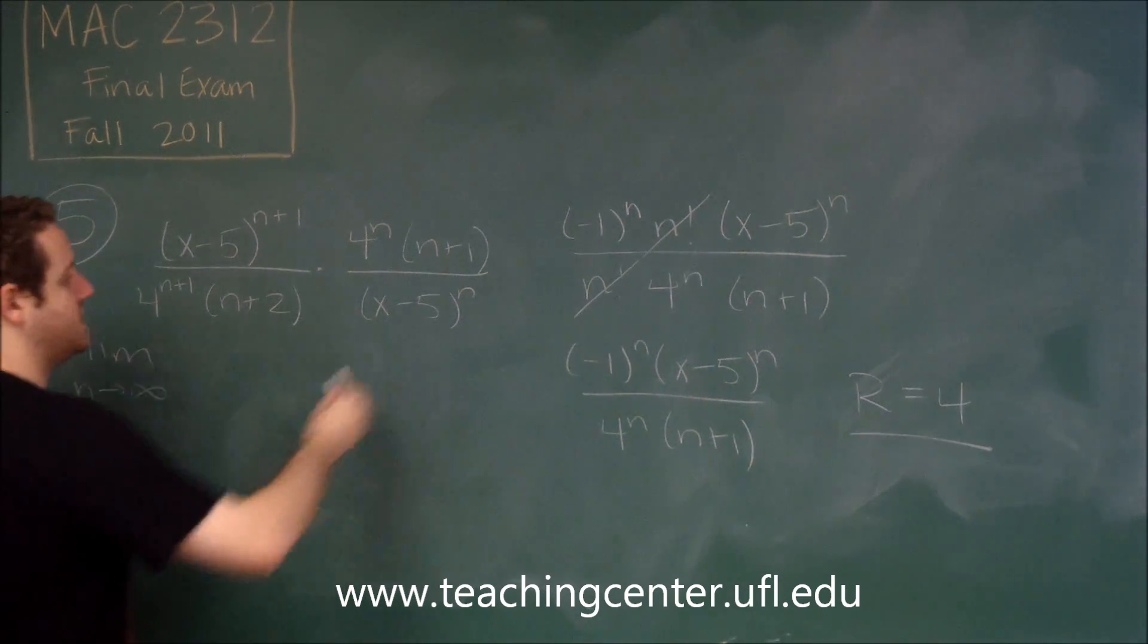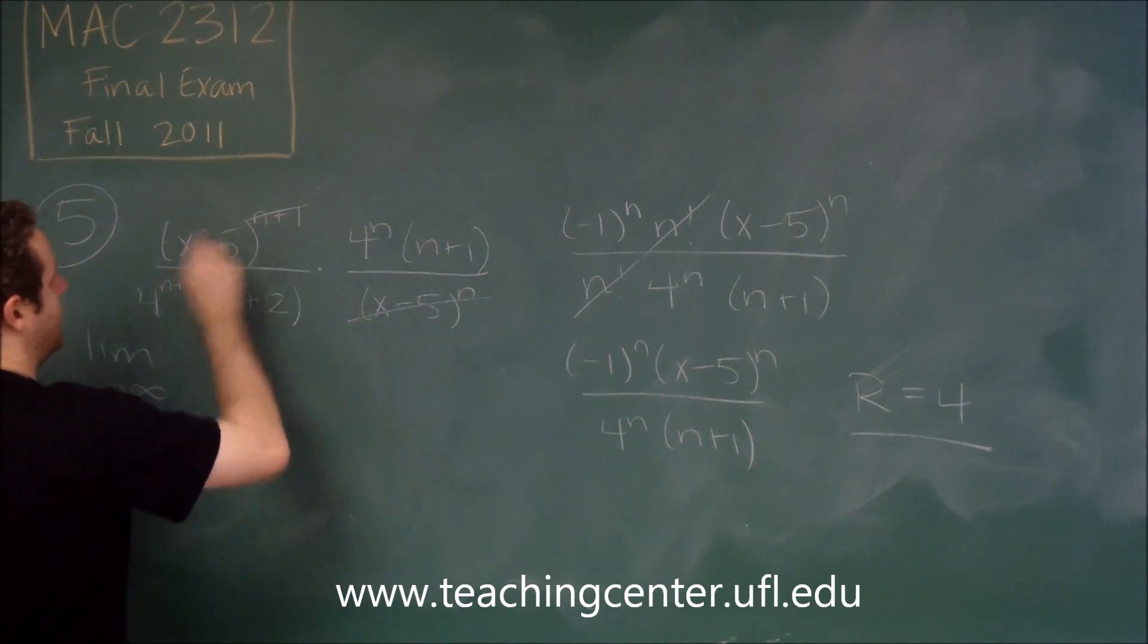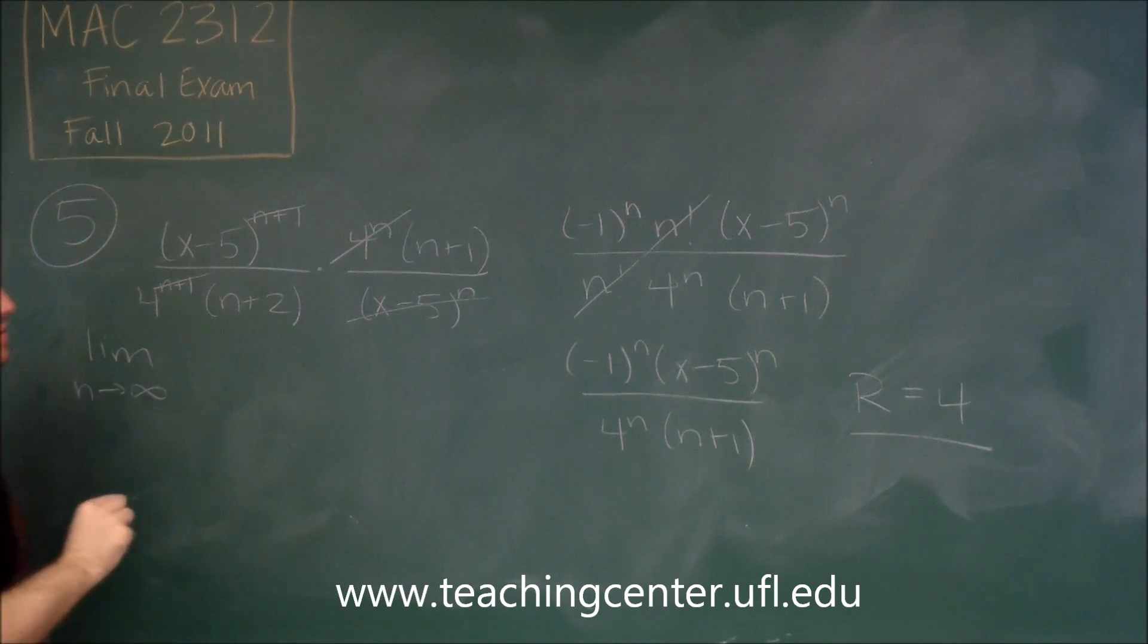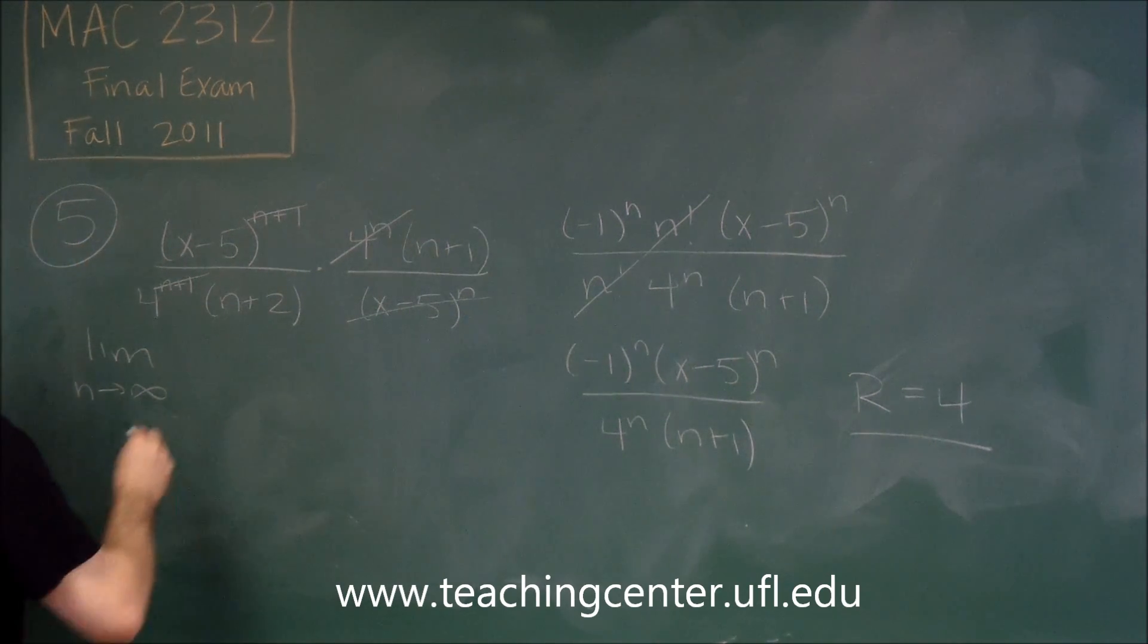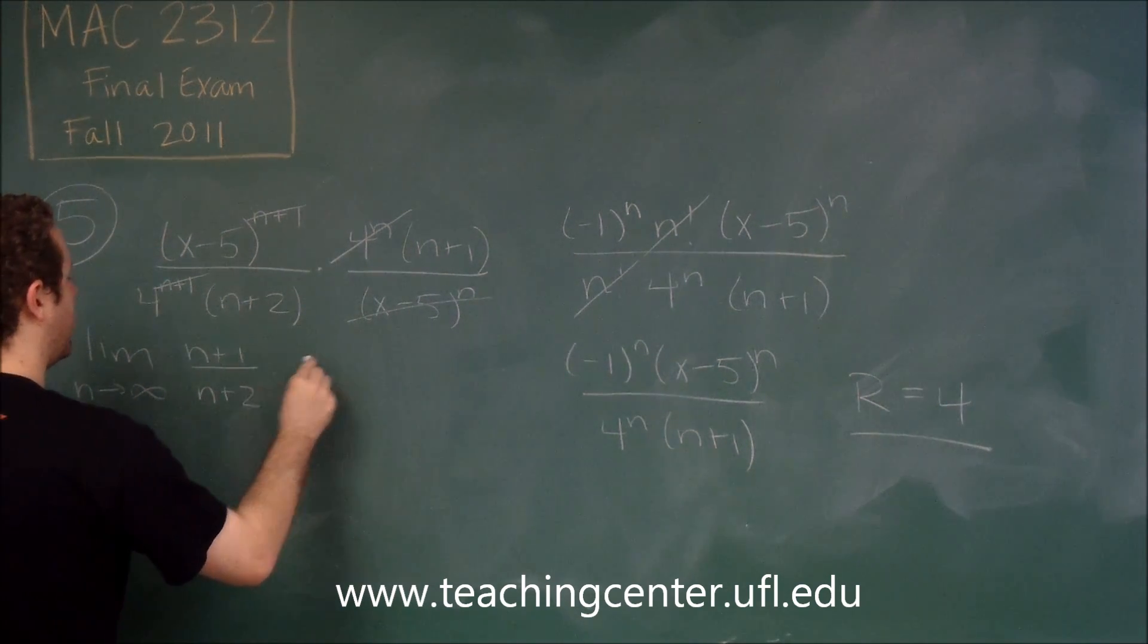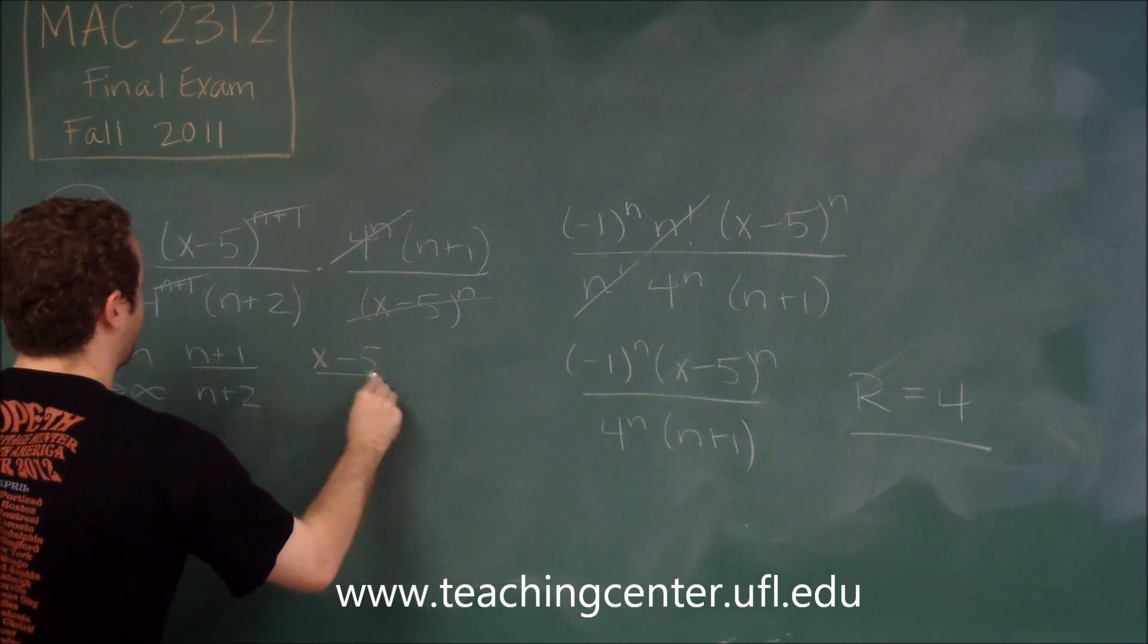But what cancels out? Well this cancels out and just leaves us with x minus 5. This cancels out and just leaves us with 4. So we have n plus 1 over n plus 2 times x minus 5 over 4.